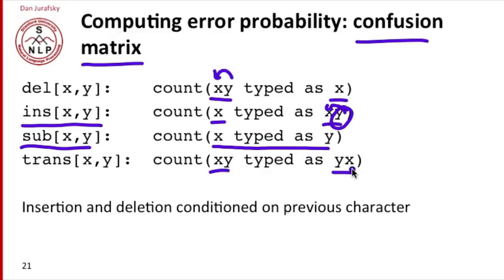These are just counts. We'll keep a matrix of these counts for every x and for every y. Notice that what we've done implicitly is we've conditioned our insertion and our deletion on the previous character. So whether y is deleted is conditioned on x.